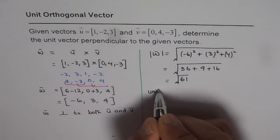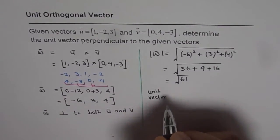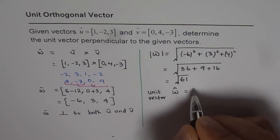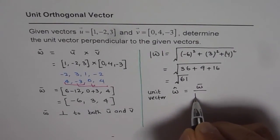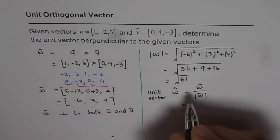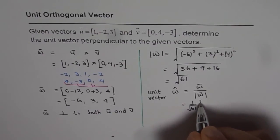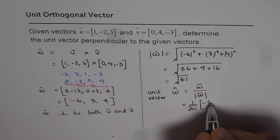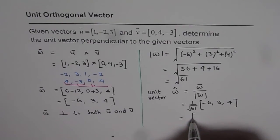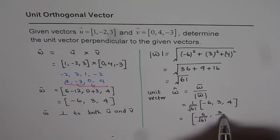The unit vector — sometimes written with a hat notation — should be the vector divided by its magnitude. When we divide the vector by its magnitude, the magnitude divided by magnitude gives 1, yielding the unit vector. Therefore, the unit vector equals 1 over square root of 61 times the vector (minus 6, 3, 4), or equivalently, (minus 6 over square root of 61, 3 over square root of 61, 4 over square root of 61).